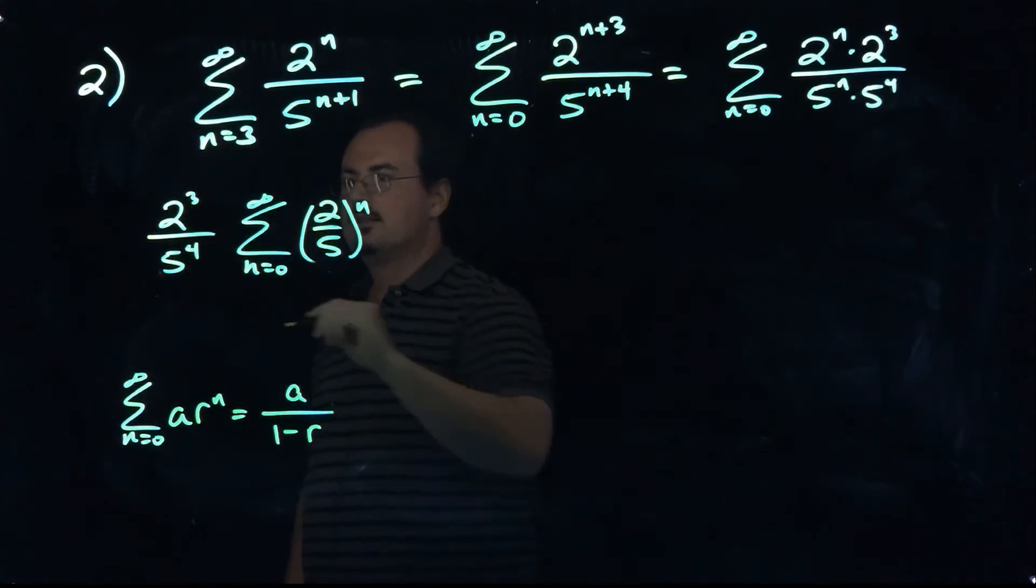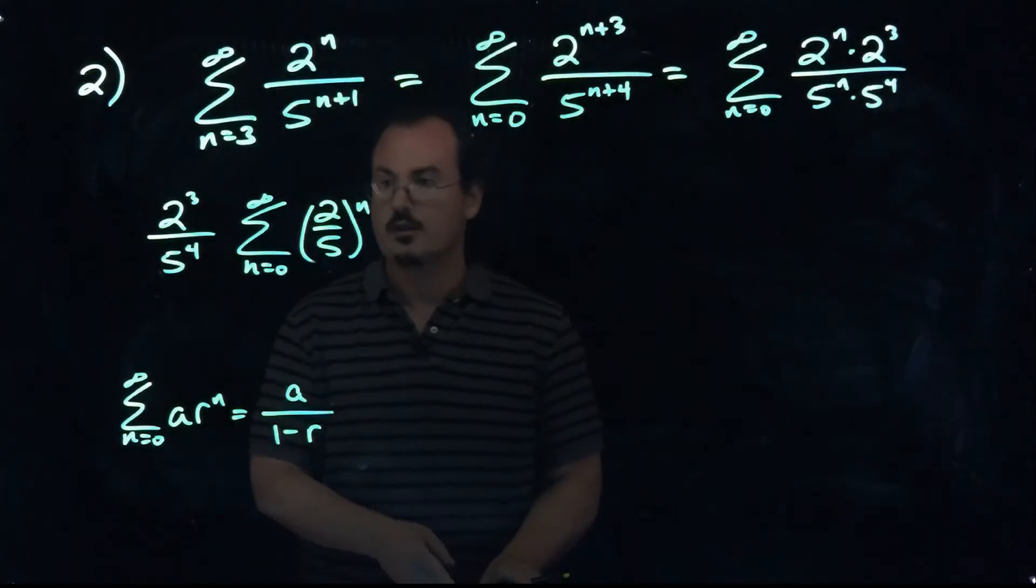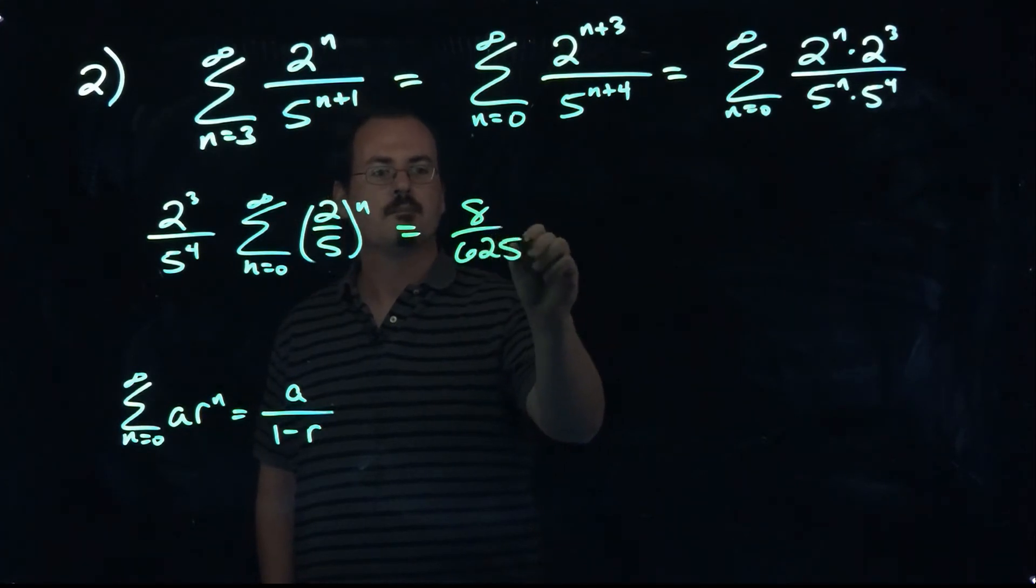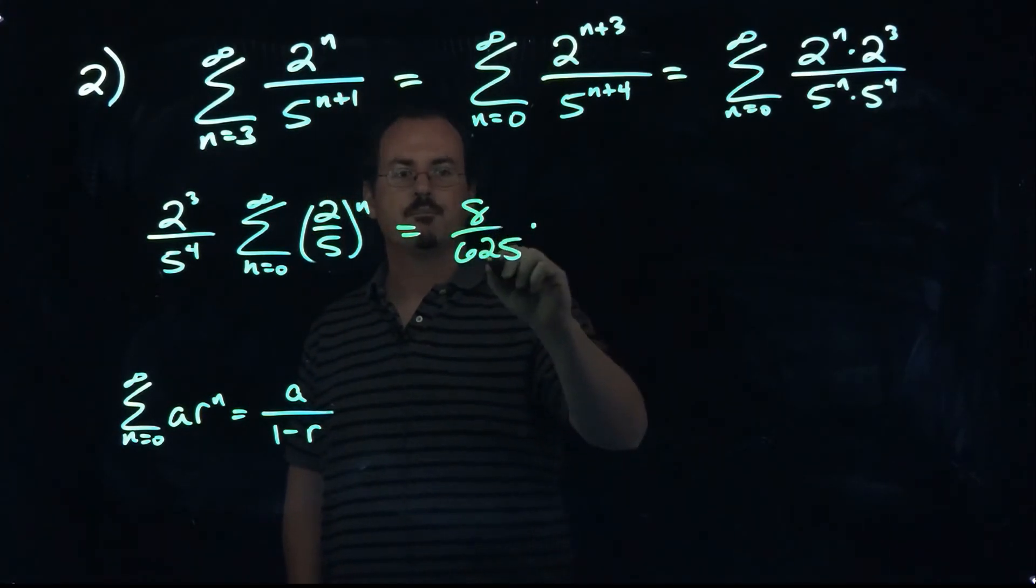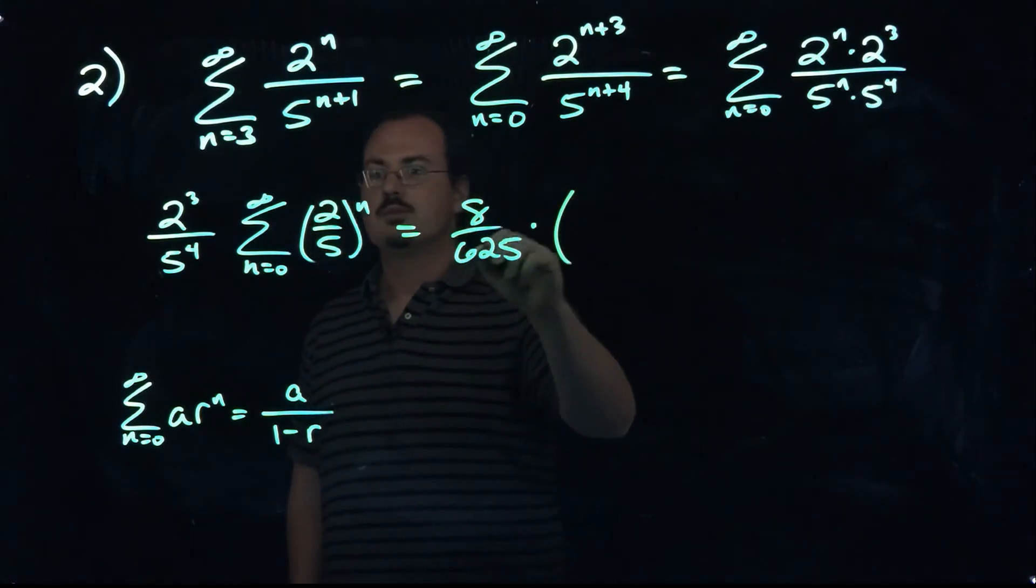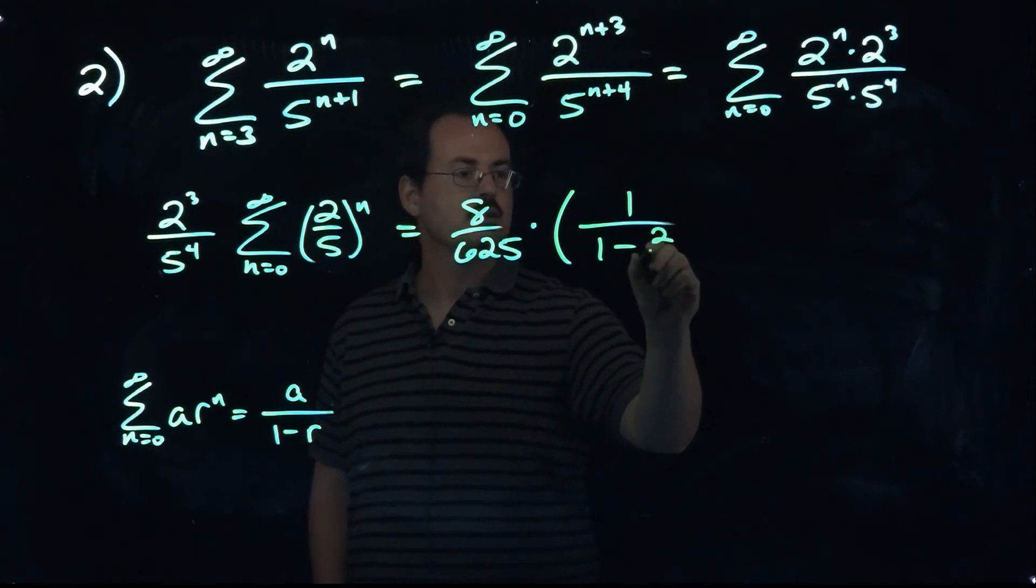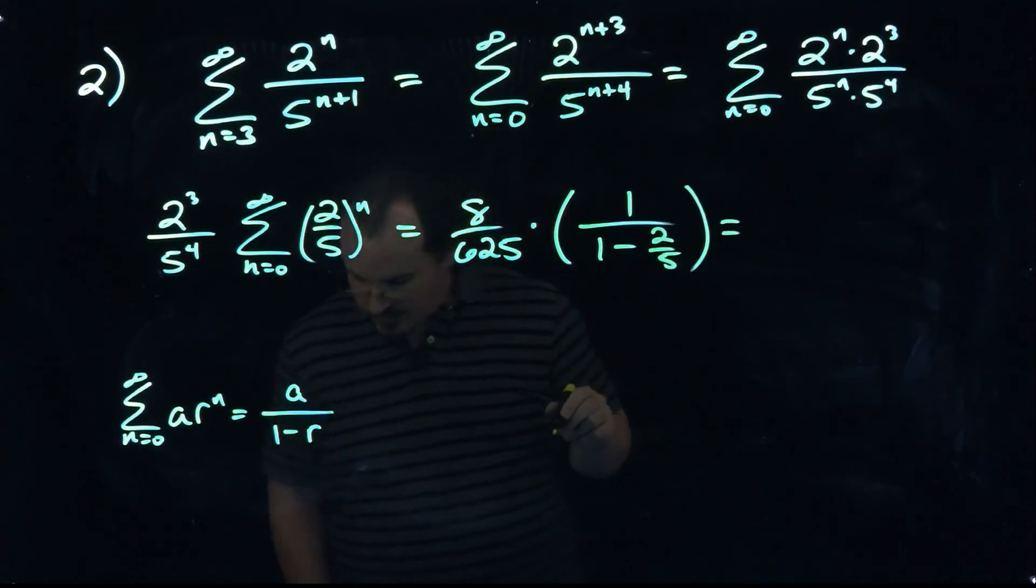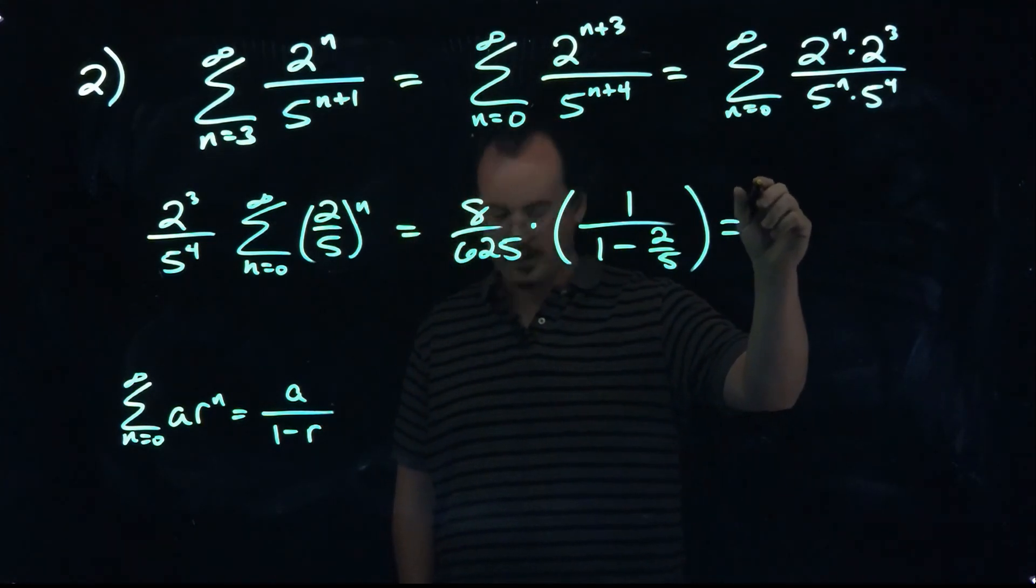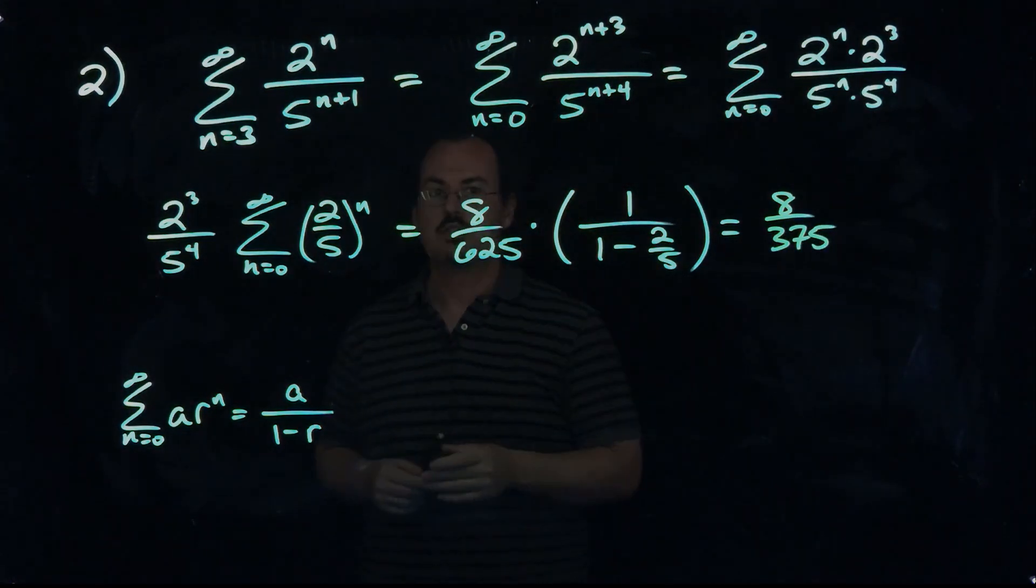So in this case, a is this quantity here. So that is eight over six hundred and twenty-five. Multiply that by, I'm just putting the r out in front rather than in the numerator there, times one over one minus two-fifths. And if you put that together, you should get the answer that we see, eight over three hundred and seventy-five. So that's the sum of this series.